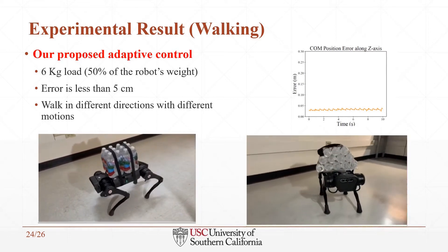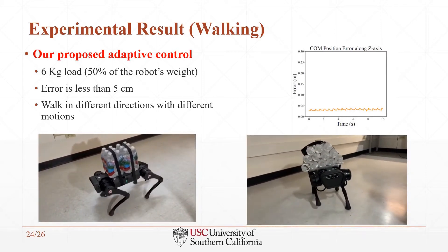Moreover, as you see, the robot can walk and rotate in every direction. We don't need different trajectories for different motions, and the robot is just controlled by velocity commands. Again, I should emphasize that the robot doesn't have any knowledge about the load we put on it.